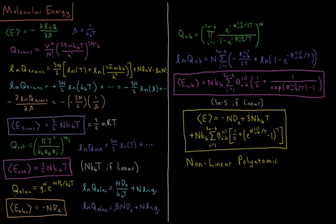Next is the electronic part, which is simpler than the vibrational part. The electronic partition function is g₁ⁿ · e^(n·De/kT), where g₁ is the degeneracy of the ground electronic state and De is the dissociation energy. The natural log is n·De/kT + n·ln(g₁), or in terms of beta: β·n·De + n·ln(g₁). Taking the derivative with respect to beta gives minus n·De, so the average electronic energy is −n·De.